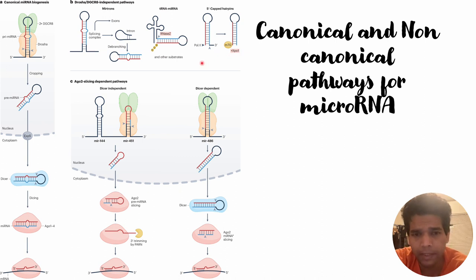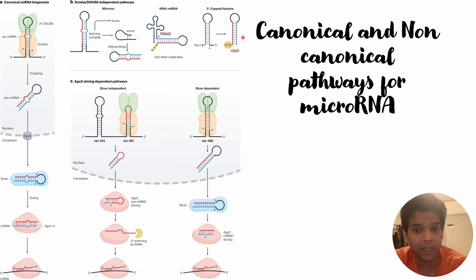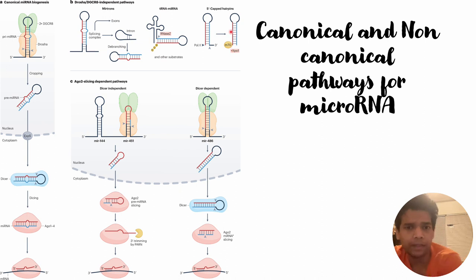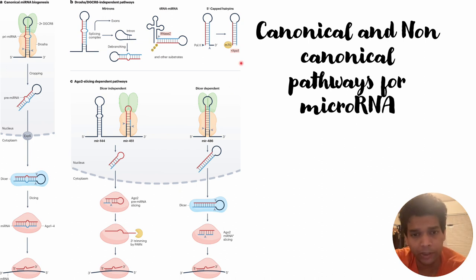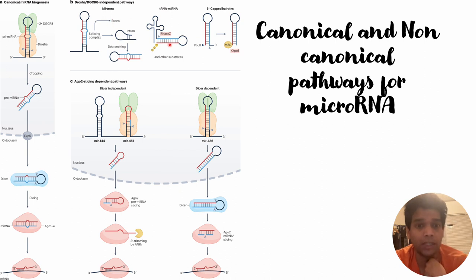Another type of non-canonical micro RNA is based on regular transcription by RNA Polymerase II. This kind of micro RNA can already have a five-prime end with a methylation cap represented by m7G, as shown in the figure. Since it already has this five-prime capped hairpin, it can directly go into the cytosol and interact with AGO for further micro RNA processing. It does not need the microprocessor within the nucleus.